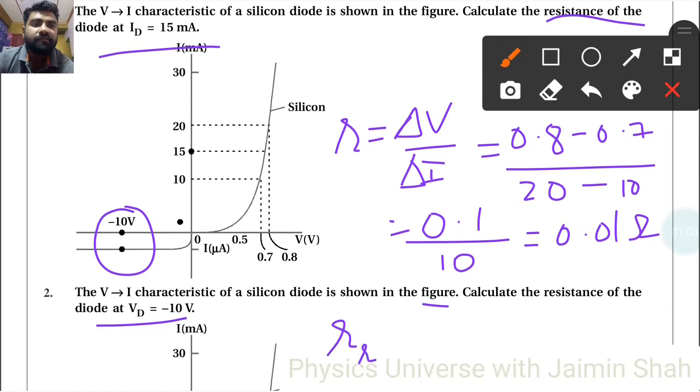So VD is minus 10, at that time minus 1. So here 10, see here this is milliampere, right, so into 10 raised to 3.